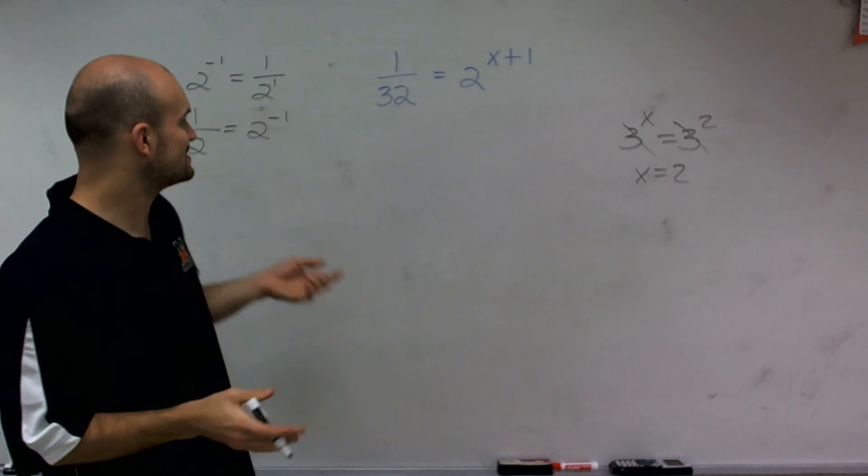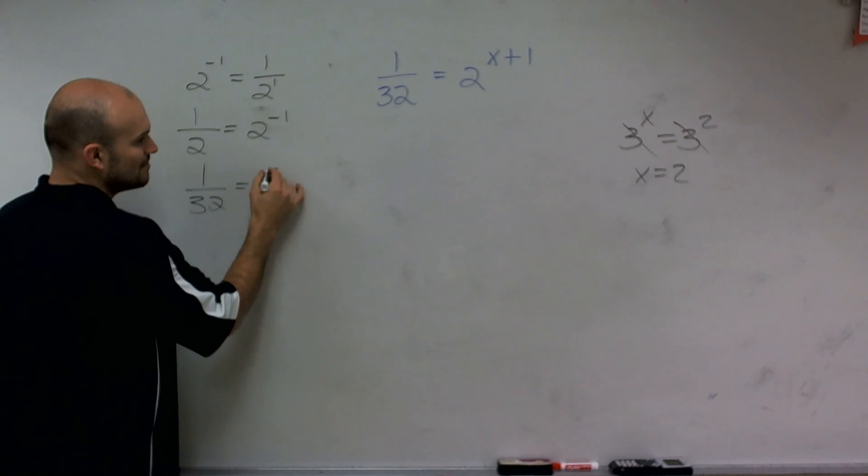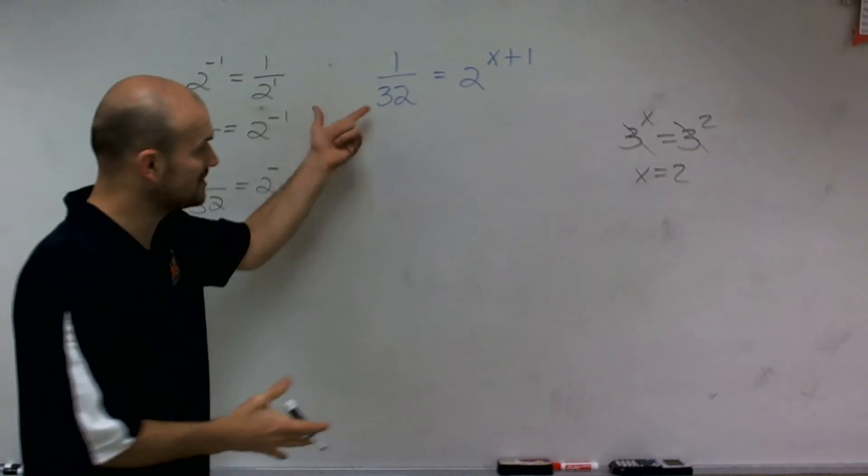So now what we want to see is all I need to do is I need to get 1 over 32. So I know that's going to be 2 to some negative power, but I need to see 2 raised to what power is going to give me 32.